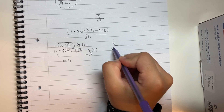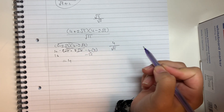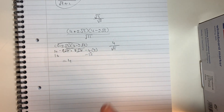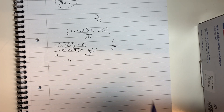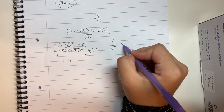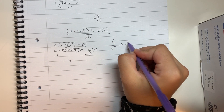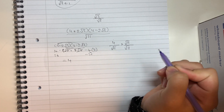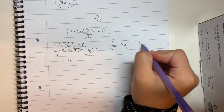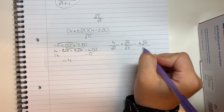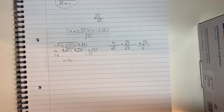So the top of the bracket simplifies to give me 4, leaving me with 4 divided by root 11. But that's not my final answer — I won't get full marks because there's a surd at the bottom. To get rid of it, I need to rationalize by multiplying by root 11 over root 11, which gives me 4 root 11 over 11, because a surd multiplied by itself cancels out.